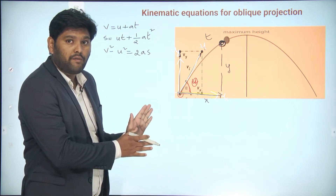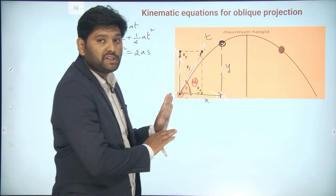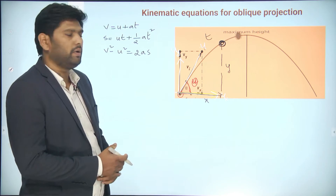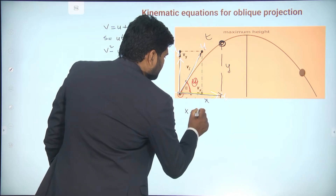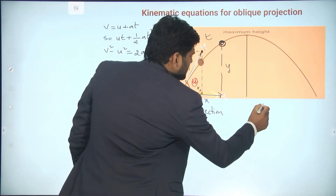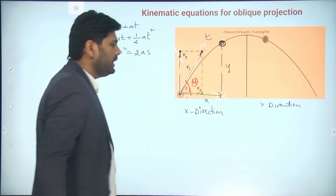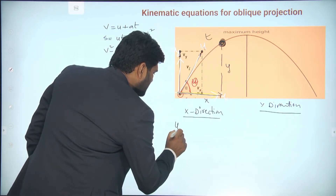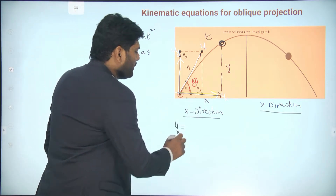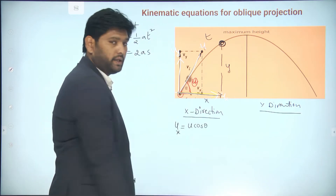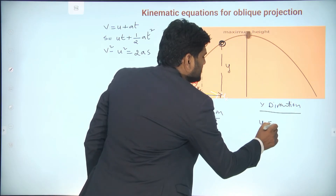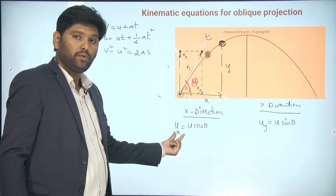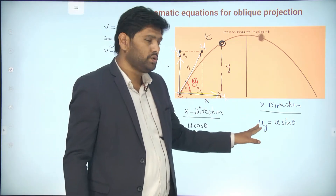The object has physical quantities changing in two directions: x direction and y direction. I will write this in tabular form. Along the x direction, the initial velocity is u_x = u cosθ. Along the y direction, the initial velocity is u_y = u sinθ. So when resolving the initial velocity into components: along x direction, u_x = u cosθ; along y direction, u_y = u sinθ.